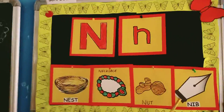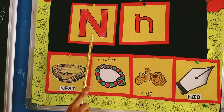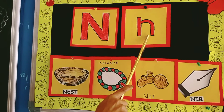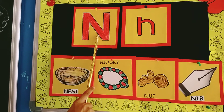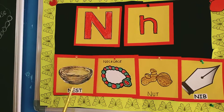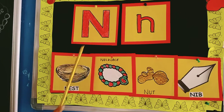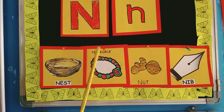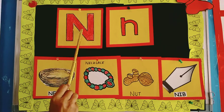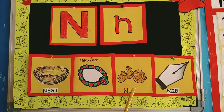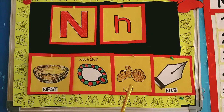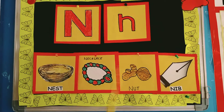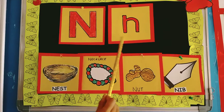Can you identify these all now? These are the flashcards of letter N. This is capital N and this is small n. Once again — capital N, small n. This is also nest. N for nest. N for necklace. N for nuts. N for nib.